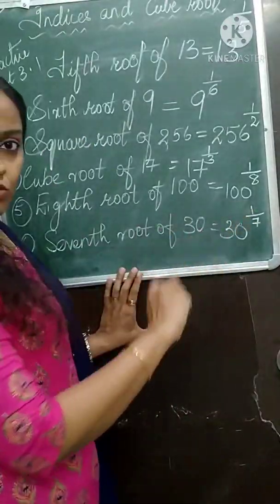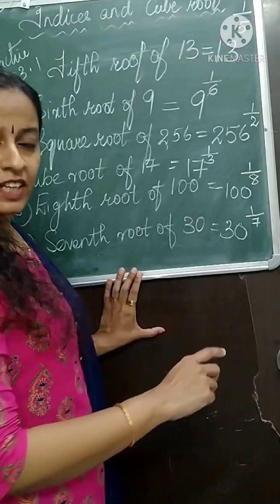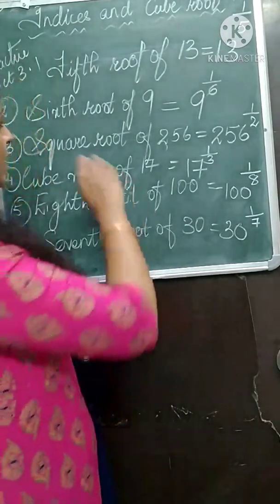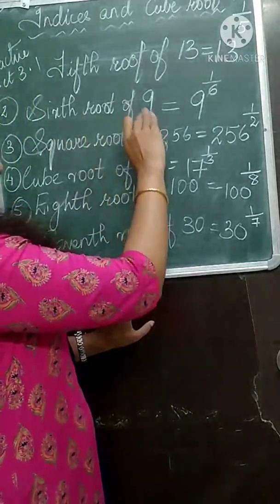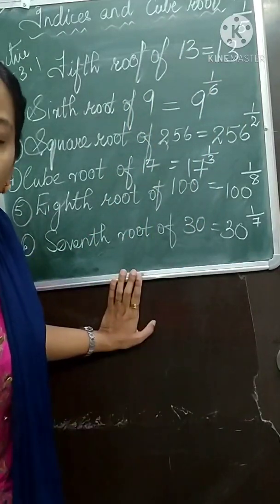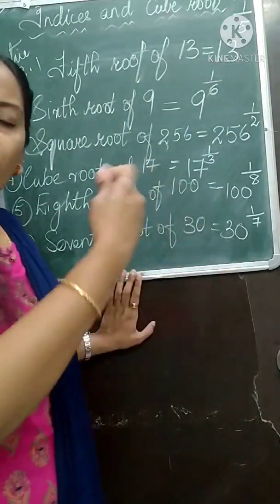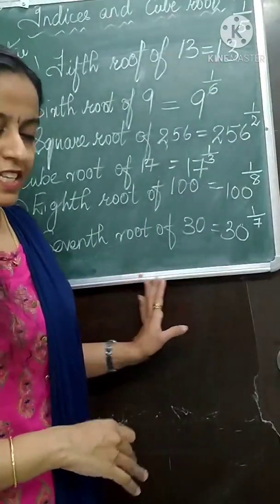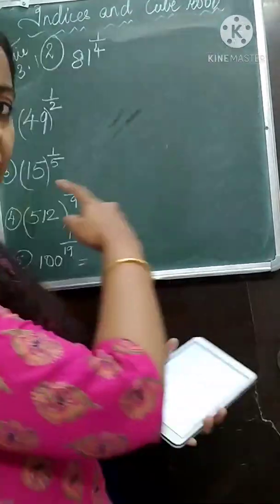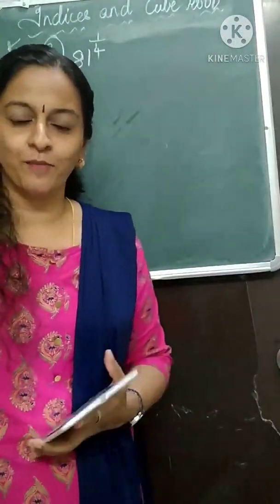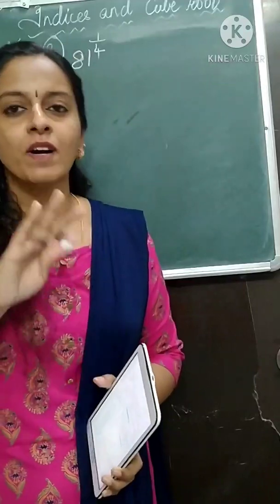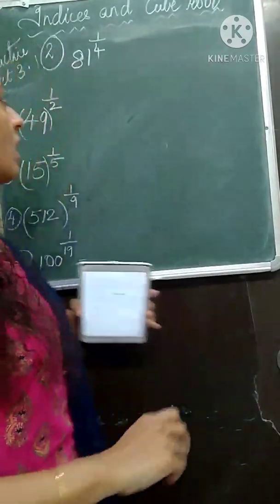The opposite can also be asked — write in words and write in figures. Now the words were given and you wrote it in index form. Next, index form will be given and you have to write it in words. That is the next part of the practice set — they are giving it in index form, we will write it in words.